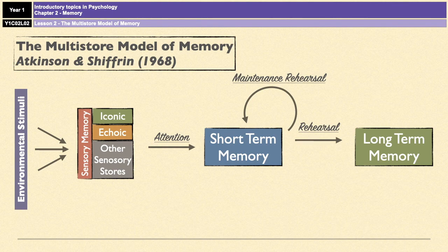Once information is in long-term memory and you need to access those memories, you use a process called retrieval, which brings long-term memories back into short-term memory so that we can do something with them.